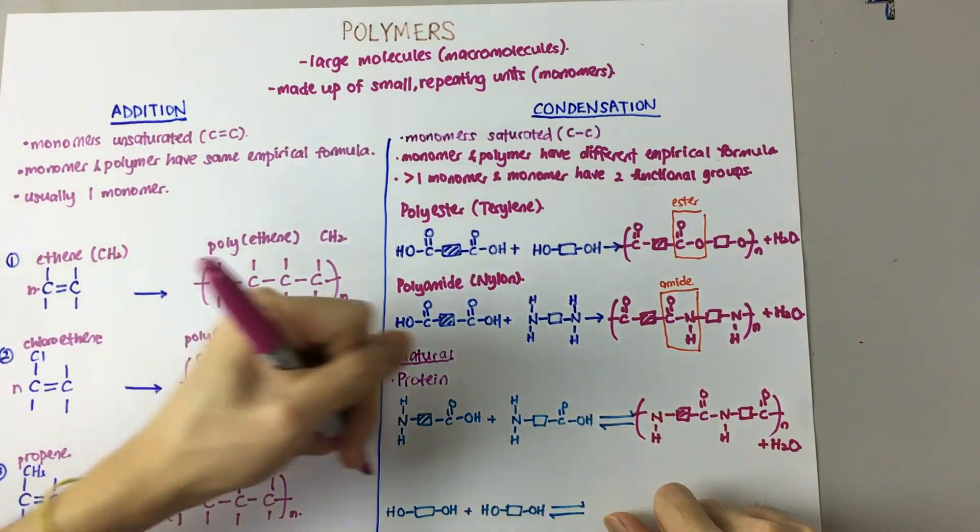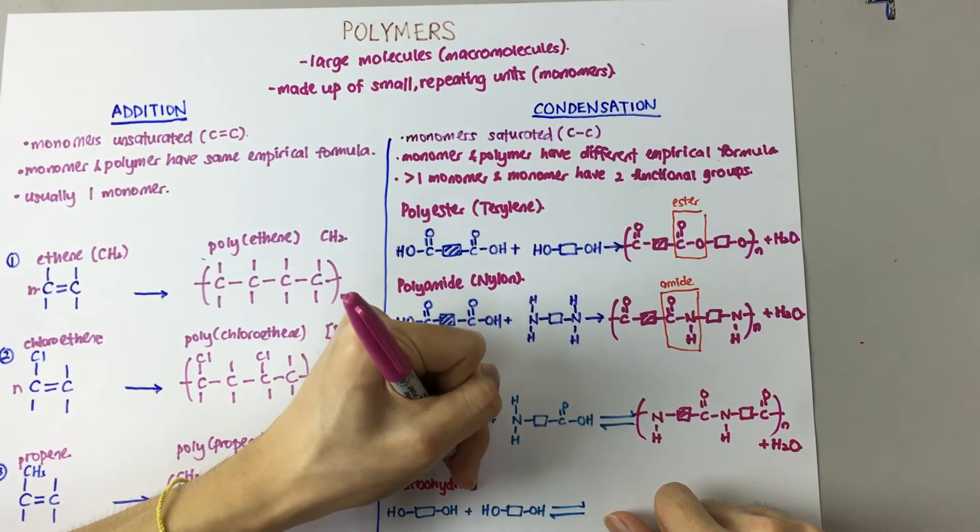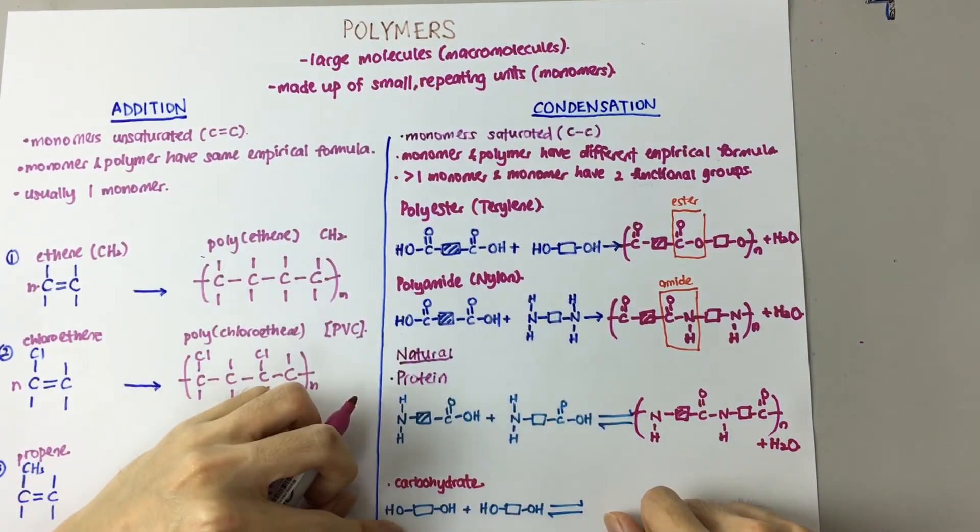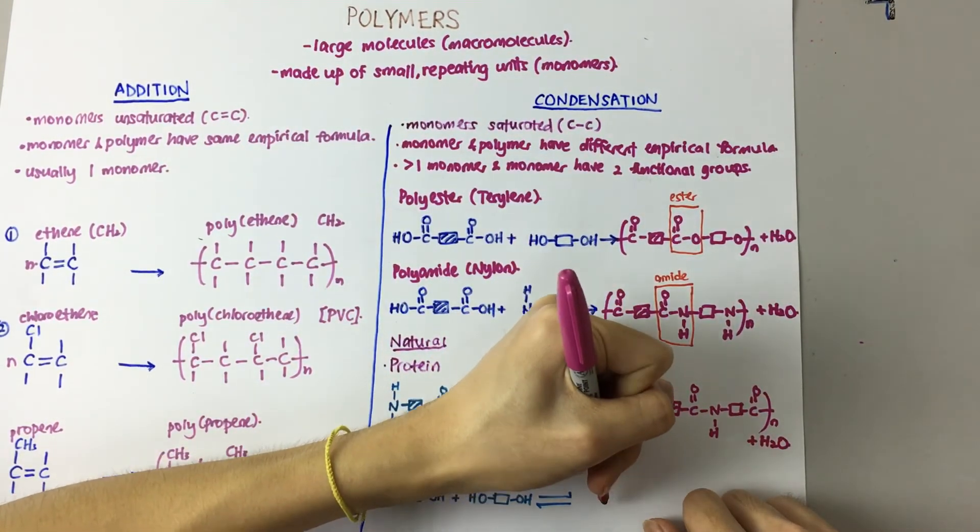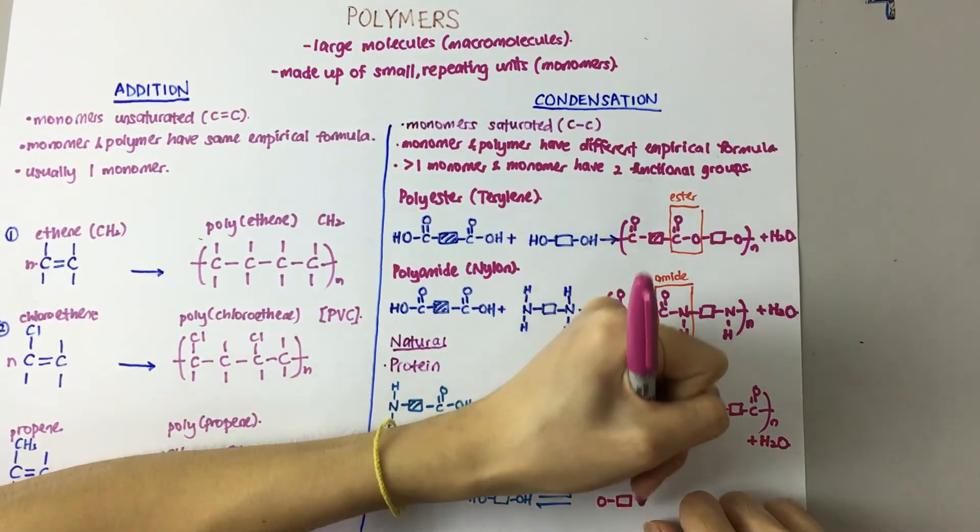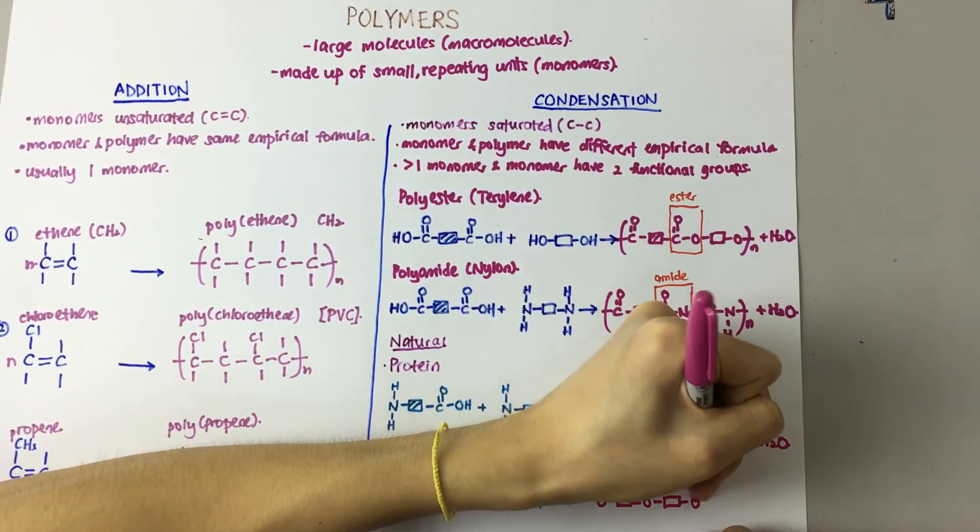Now, the last one here we look at is carbohydrate. The monomer is glucose. So, when it becomes a polymer, water is lost as well. So, the linkages here look something like this.